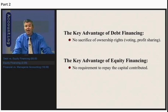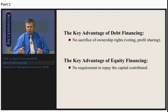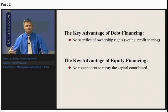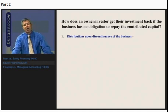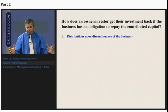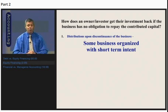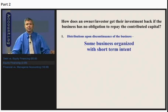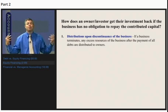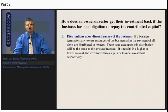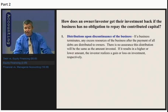The key advantage of equity financing is there's no requirement to repay any of the capital contributed by investors who become owners. Students often ask: if a business is never obligated to give those resources back, how does an investor get their investment back? One way is through distribution upon discontinuance of the business — some businesses are organized on a temporary basis. When the business terminates, any excess resources after paying off all debts are distributed back to the owners. However, there is no assurance that this distribution will equal the amount originally invested — the investor effectively realizes a gain or loss, respectively.